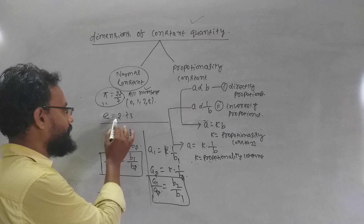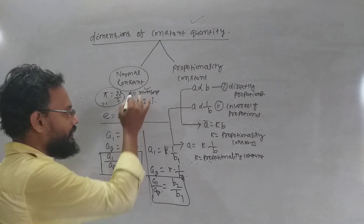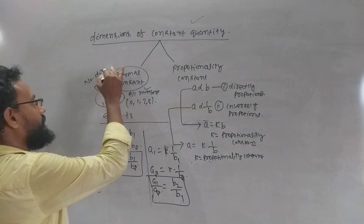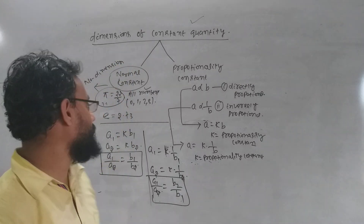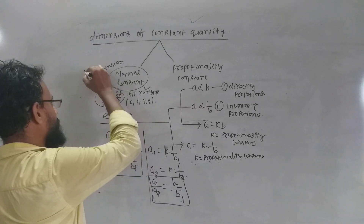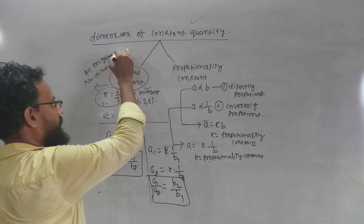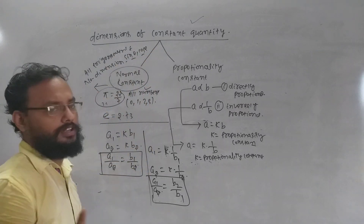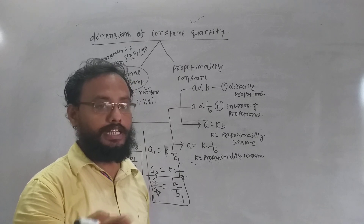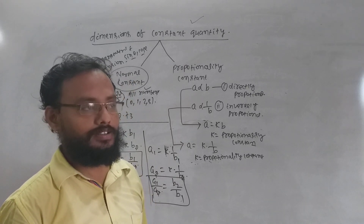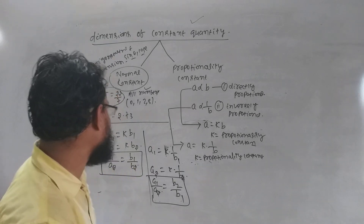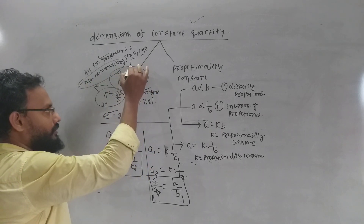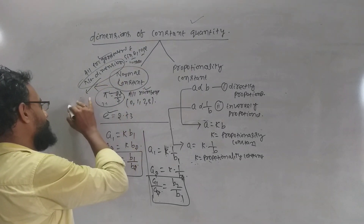So, a normal constant has dimension zero. E is a value, so it has no dimension. All trigonometric functions — sin theta, cos theta — these terms are seen in physical quantity formulas, and they also have no dimension. Sin theta, any number, constant e — it has no dimension. So these are dimensionless quantities.